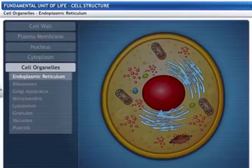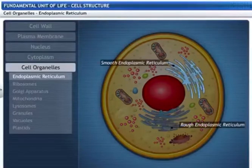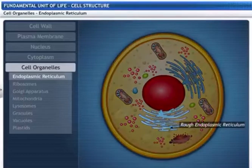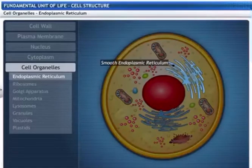There are two types of endoplasmic reticulum, rough and smooth. Rough endoplasmic reticulum has ribosomes present on it, while they are absent on smooth endoplasmic reticulum.